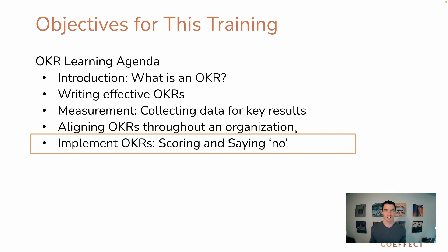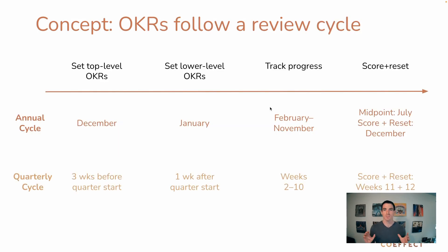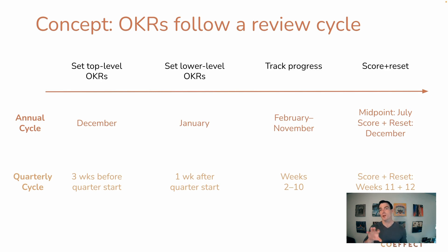So we're on our final video here, and I really appreciate you joining me for this training. One of the most important concepts as you think about implementing this is understanding what your review timing is. Typically, we have a sequence of review: we start at our top level objectives and key results, then lower level objectives and key results, tracking progress over a certain period of time, scoring those on a regular basis and resetting our OKRs for the next cycle.